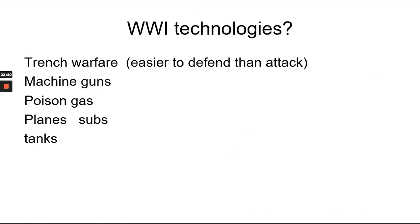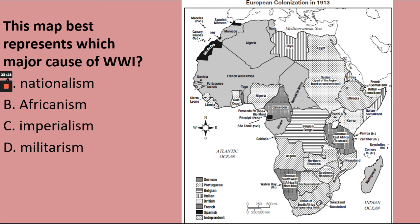World War I technologies: trench warfare. It's easier to defend a trench than to attack one — that's why millions of men died pointlessly with nothing to show for it. Machine guns go along with trenches and barbed wire. Poison gas, airplanes, submarines, and tanks are all new for World War I. Shotguns were used a lot too — it really pissed off the Germans when the Americans showed up with shotguns.